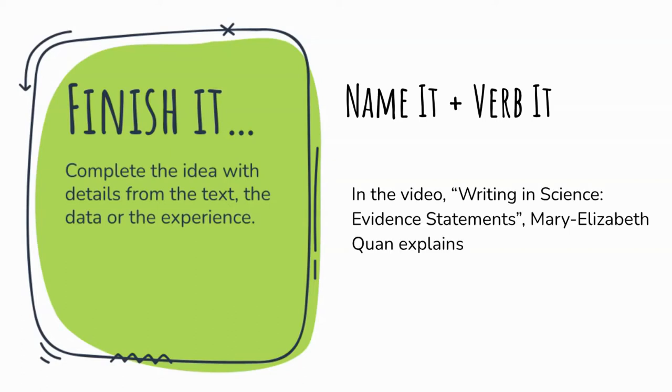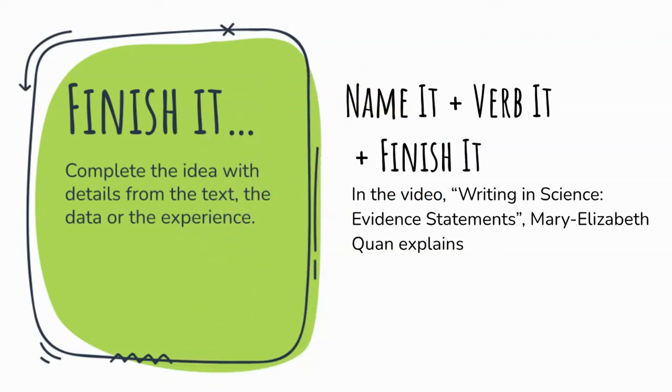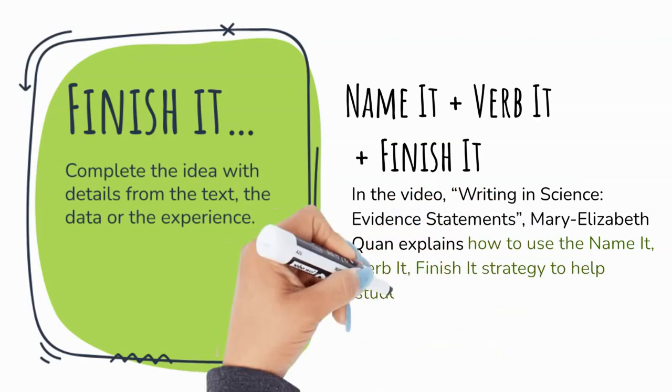So based on the verb that was chosen, students can finish the sentences in multiple ways. A student might use the same name it and verb it with a different finish it to cite more than one detail from the original source.